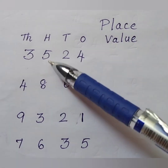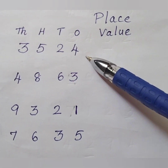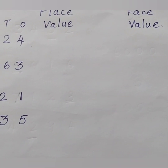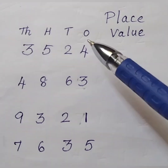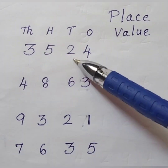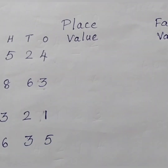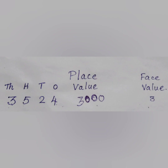In this part I will show you the place value and face value of digit 3 in all the numbers. Our first question is 3524. Here 3 is at 1000's place, so the place value is 3000 and the face value is only 3.